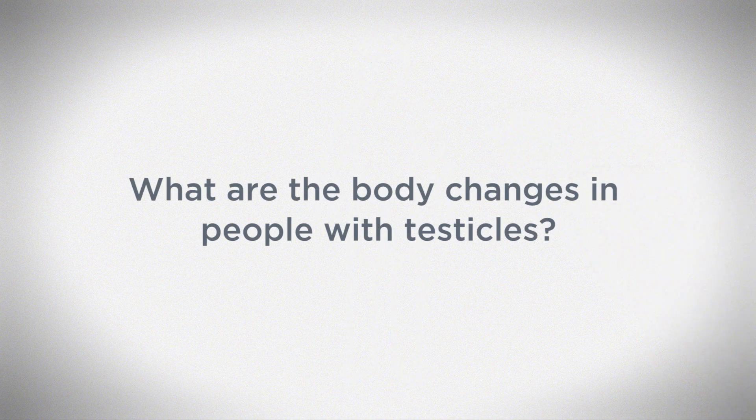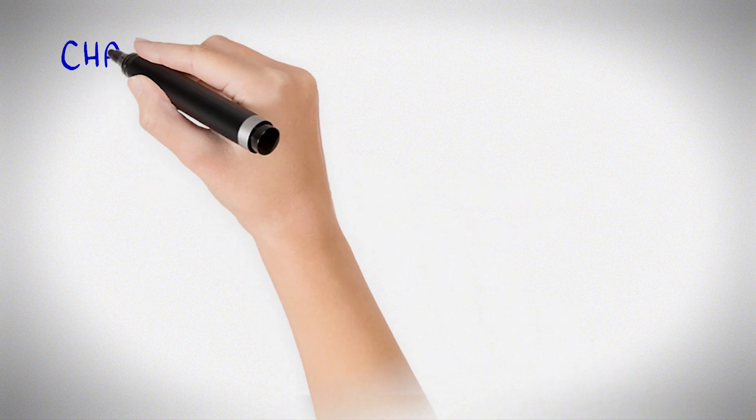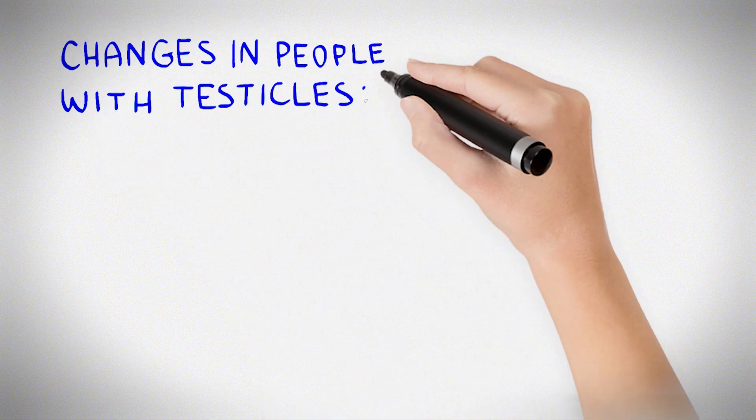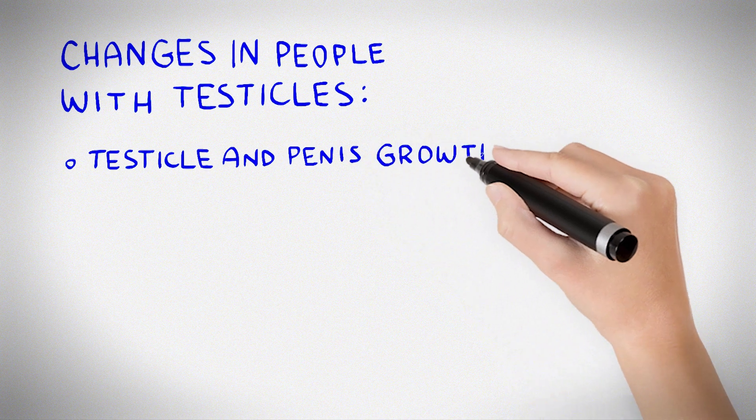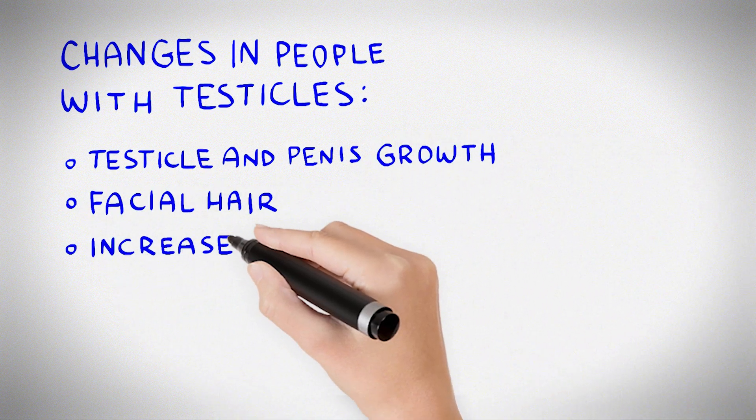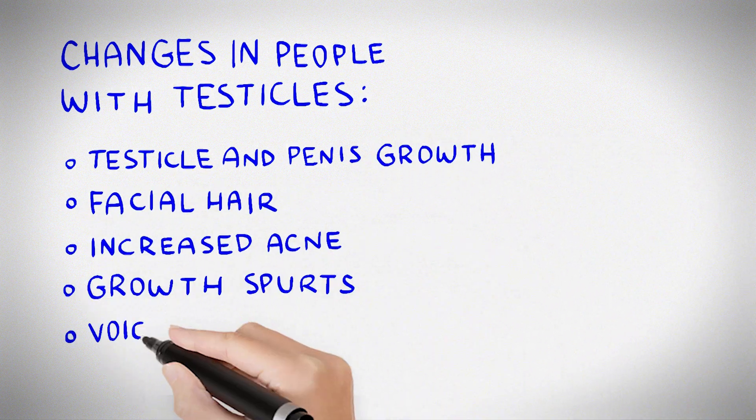What are the body changes in people with testicles? Without puberty blockers, these are the changes that happen during puberty: testicle and penis growth, facial hair, increased acne, growth spurts, voice gets deeper.